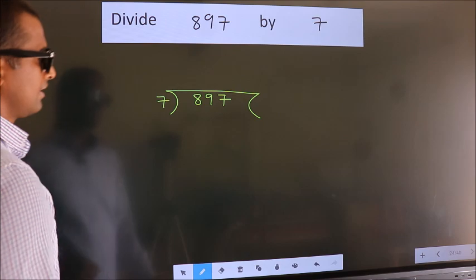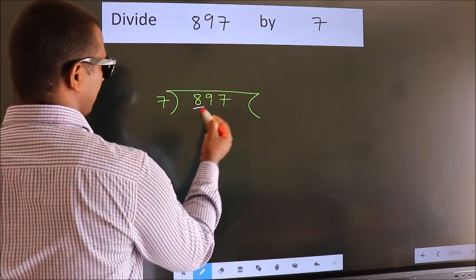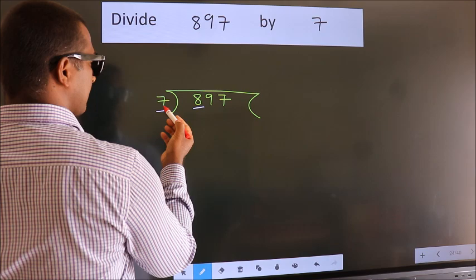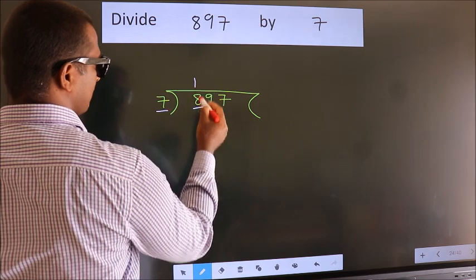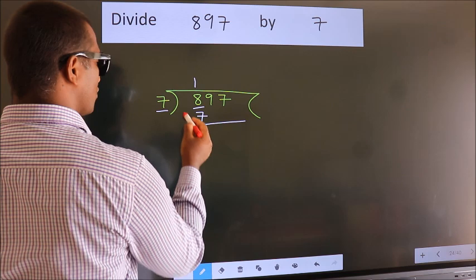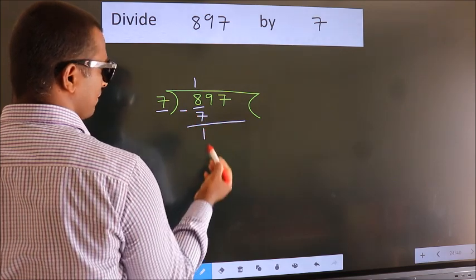Next, here we have 8, here 7. A number close to 8 in 7 table is 7 once 7. Now we should subtract. We get 1.